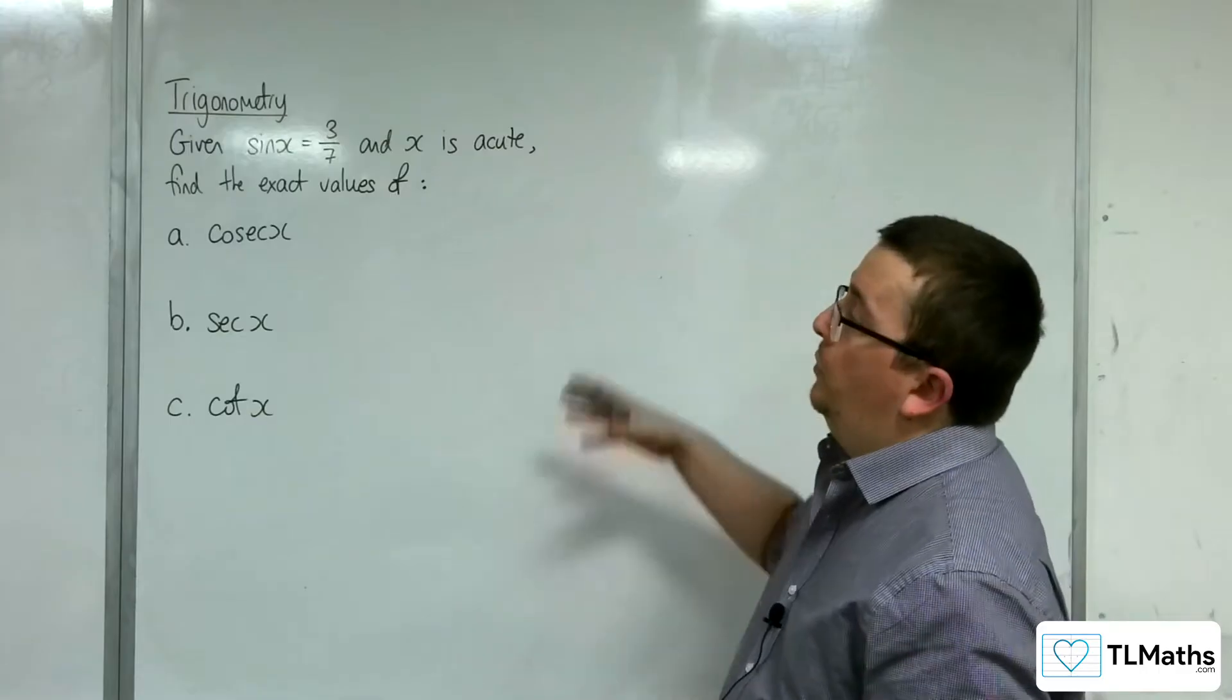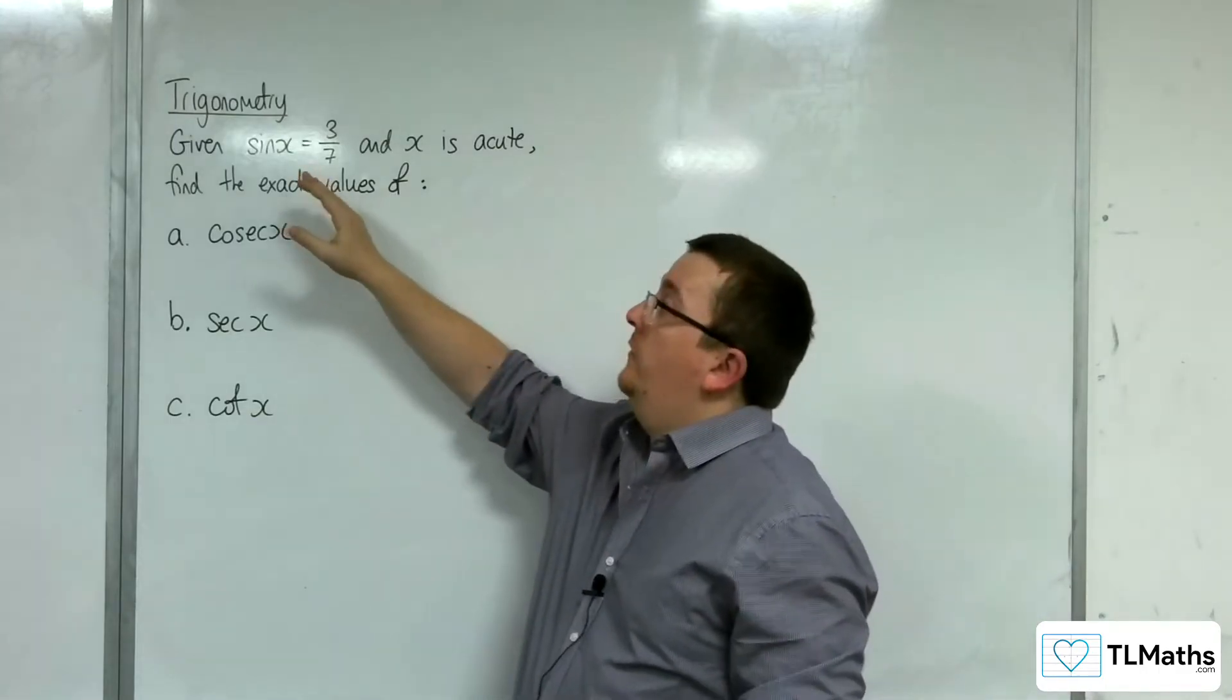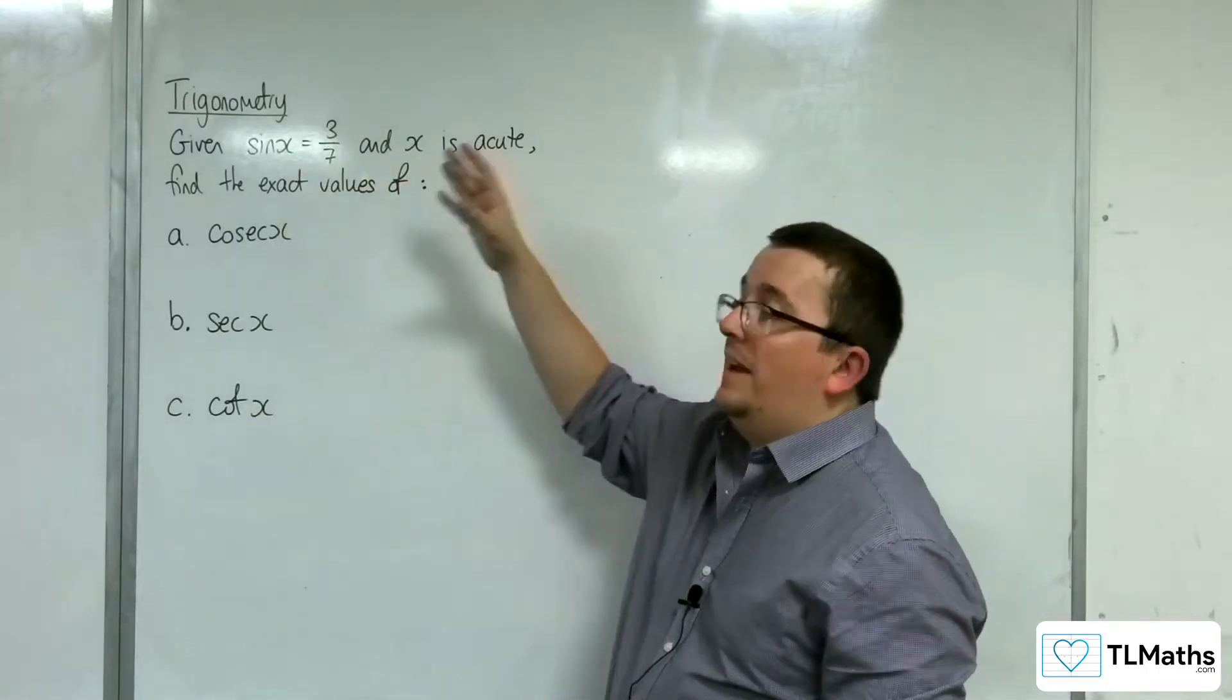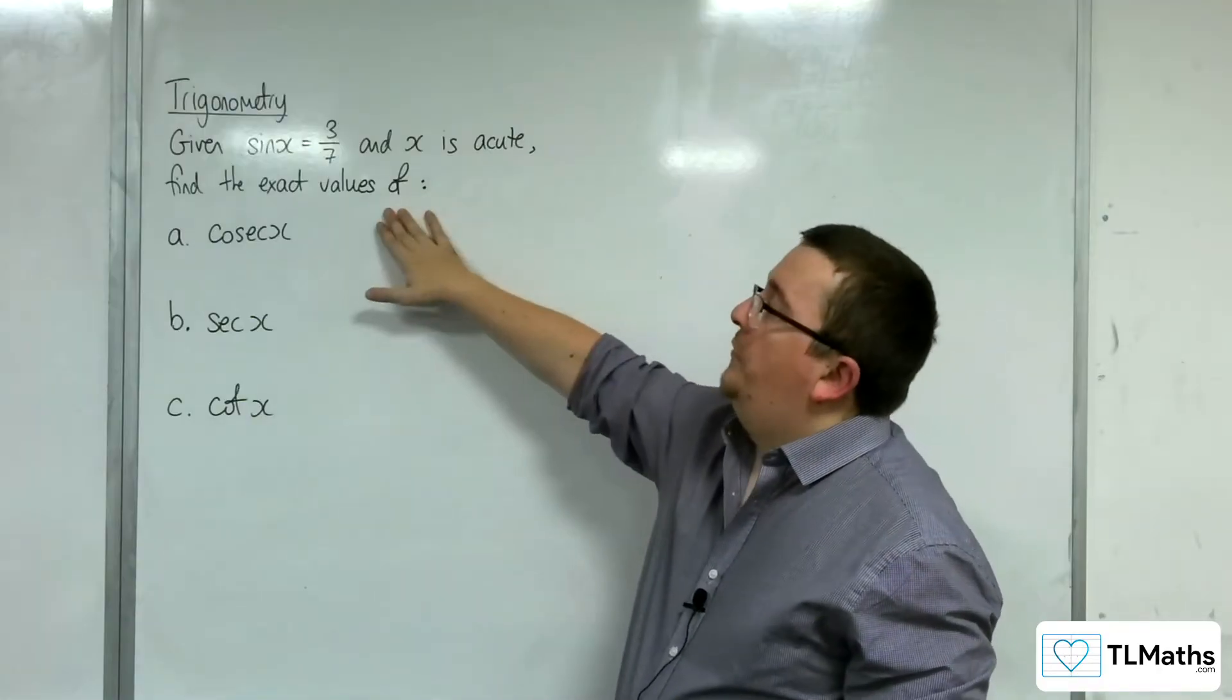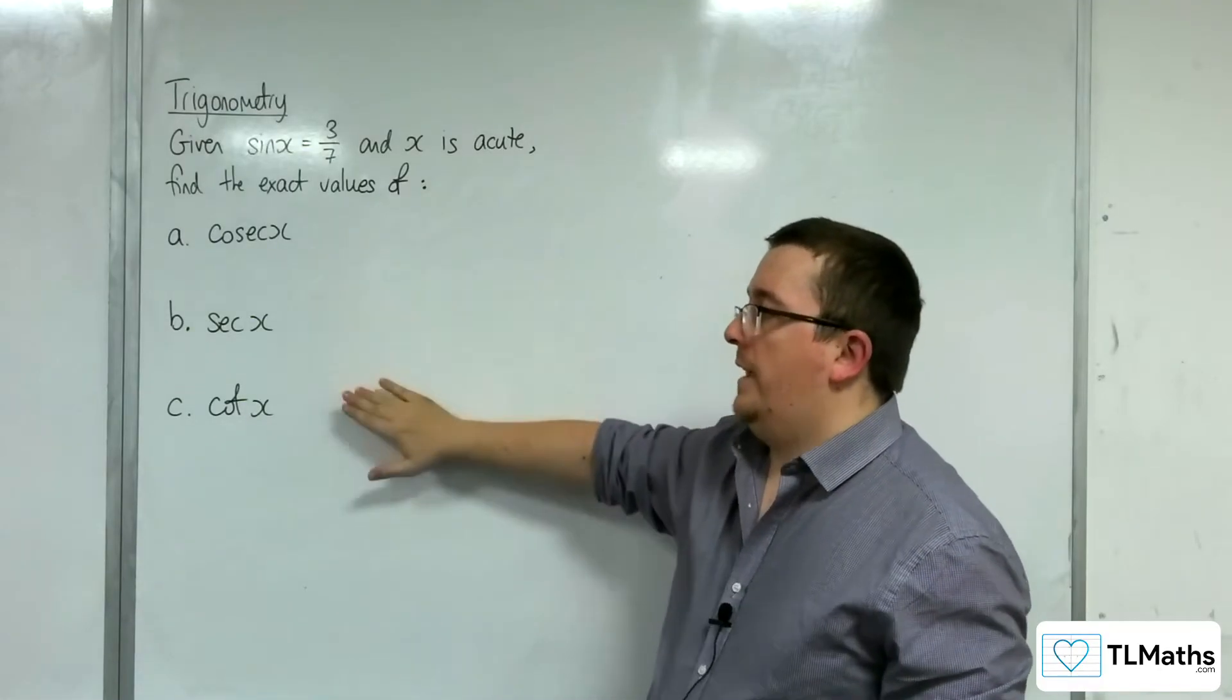In this video, we're going to see an example where we've been given sin x equals 3/7 in exact form. We're told that x is acute, and we need to find the exact values of cosec, sec, and cot.